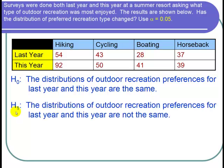And the alternative hypothesis is H1, the distributions of outdoor recreation preferences for last year and this year are not the same.